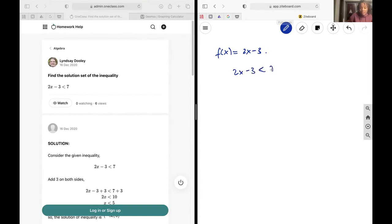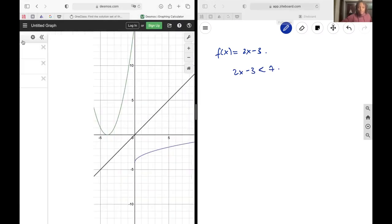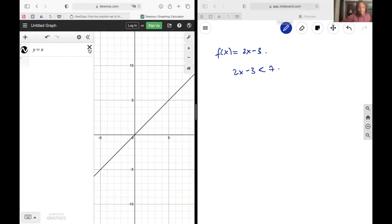If I just quickly go to Desmos and cancel my previous ones, 2x minus 3, when is the output, so when is my y value here, less than 7?